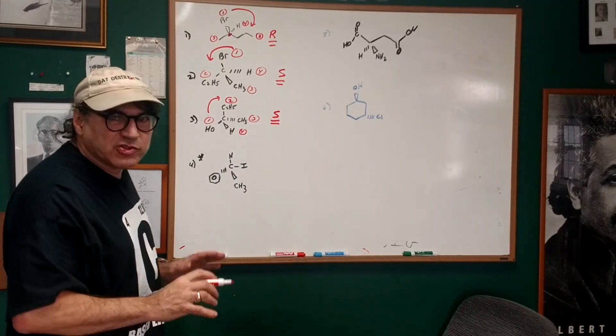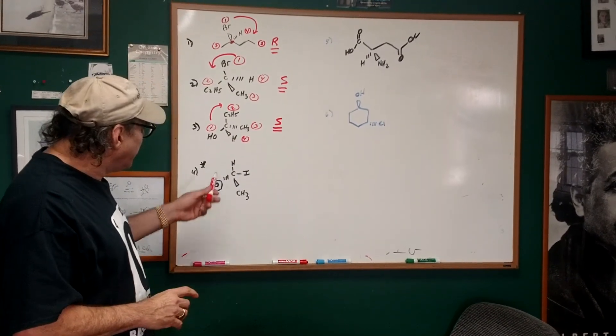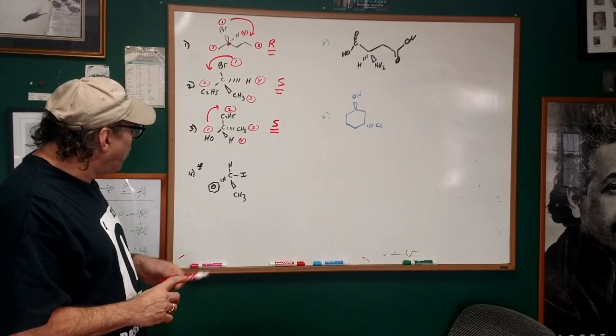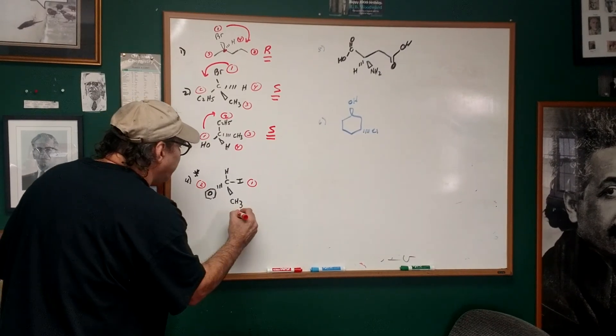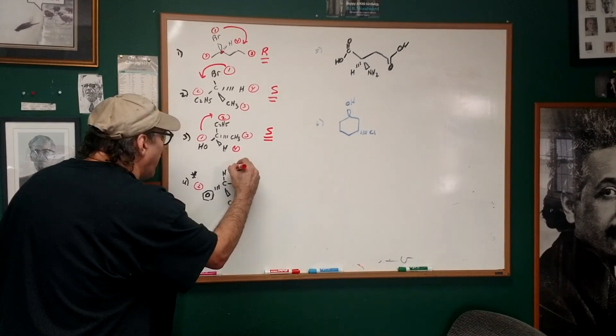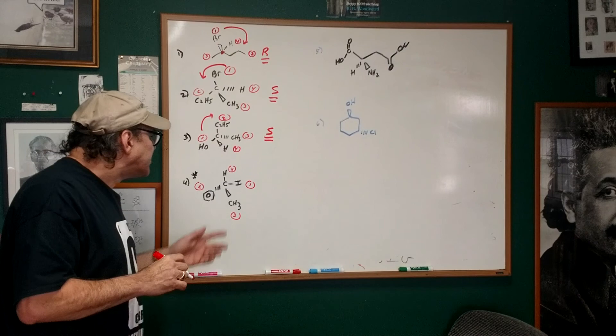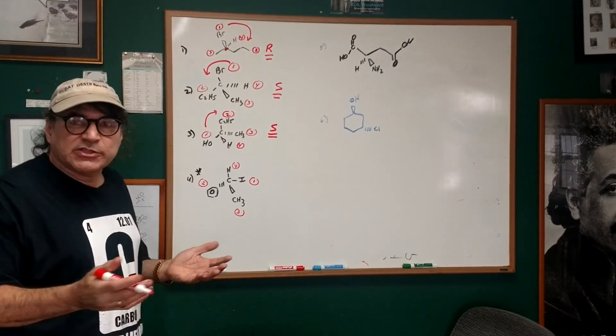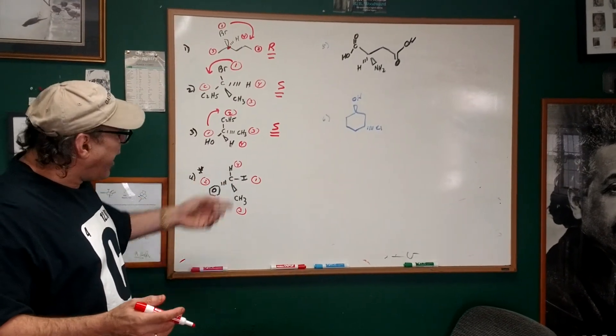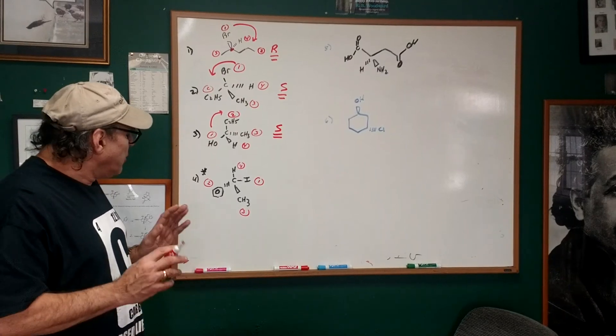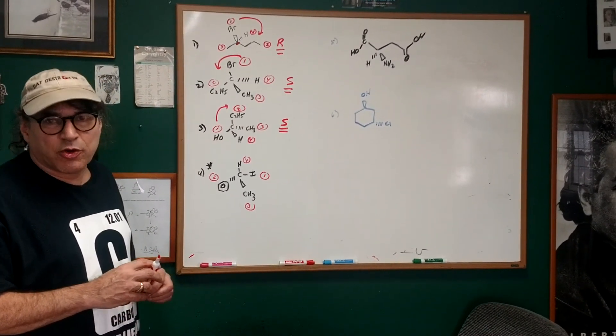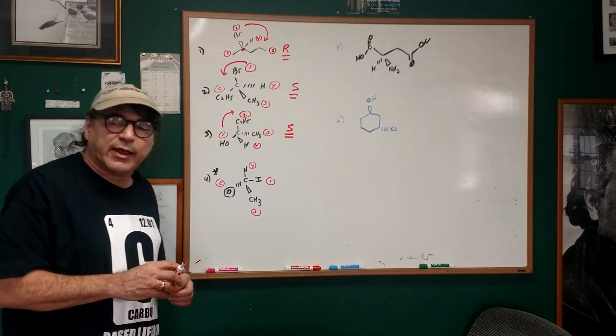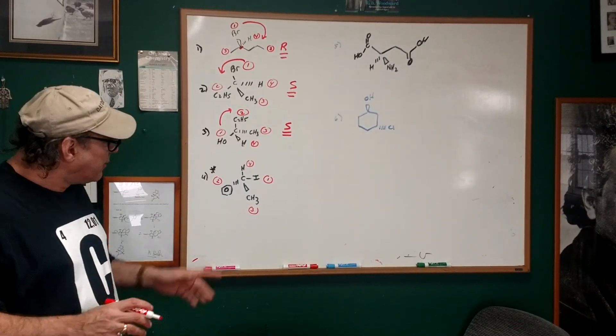Those first three most students have an easy time with. Here's the hard one. Now, what would happen if we had a problem like this, and we numbered the priorities: we have one, two, three, and four. In a situation like this, where group number four has nothing on it, there's no dash, there's no wedge. The best way to do a problem like this, as I teach my students, is we're going to rewrite this. Now, when I rewrite it, I need two interchanges.